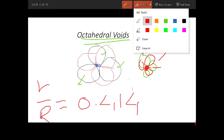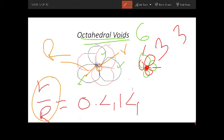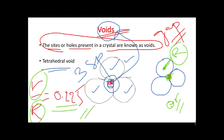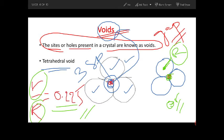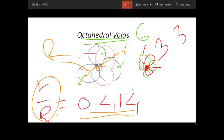For the octahedral void, if the sphere radius is capital R and the void radius is small r, then we have the formula r/R = 0.414. So to summarize: if it is a tetrahedral void, r/R = 0.225, and if it is an octahedral void, r/R = 0.414. You can practice one or two numericals based on these voids.